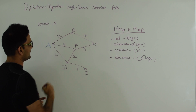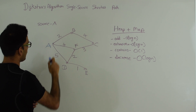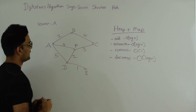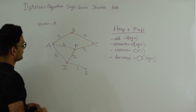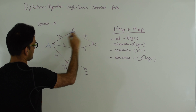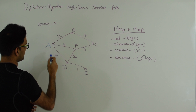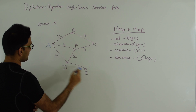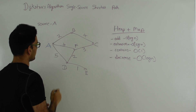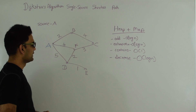For example, C can be reached from A-B-C, or A-F-C, or A-D-F-C. So the shortest distance here is via B and the distance is 6. Similarly, E can be reached via A-F-D-E or A-D-E, and the shortest distance is via A-D-E and the distance is also 6.